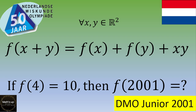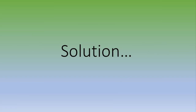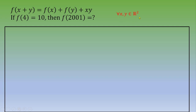One way to solve this is to focus on the functional equation, which is valid for any real values of x and y. We are going to pick specific values to transform this equation into an equation in one single variable. So let's say x equals x minus 1 and y equals 1, and then plug that into the equation.